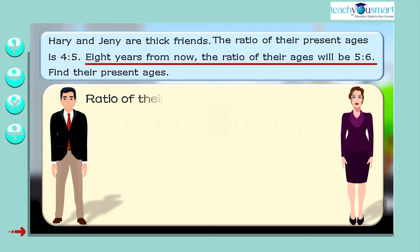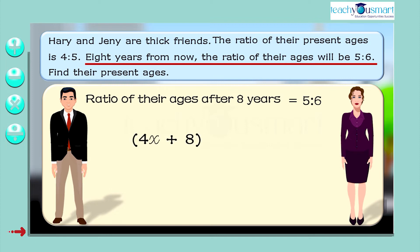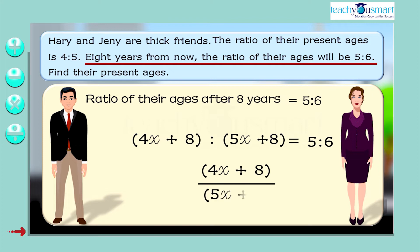The ratio of ages after 8 years is 5 is to 6. This can be written as 4x plus 8 is to 5x plus 8 equals 5 is to 6, or: (4x + 8) divided by (5x + 8) equals 5 by 6.